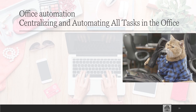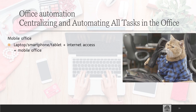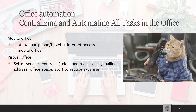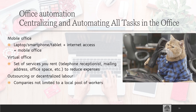Many tasks are being automated in the office. In a mobile office, you can use a laptop, a smartphone, a tablet, and internet access — and you have a mobile office. A virtual office is when you have a set of services that you rent, for example a receptionist, a mailing address, and office space. It reduces your expenses because you don't actually have a physical office. Outsourcing or decentralized labor is when you hire labor from a local pool of workers, and you can employ workers from anywhere in the world, which saves costs.